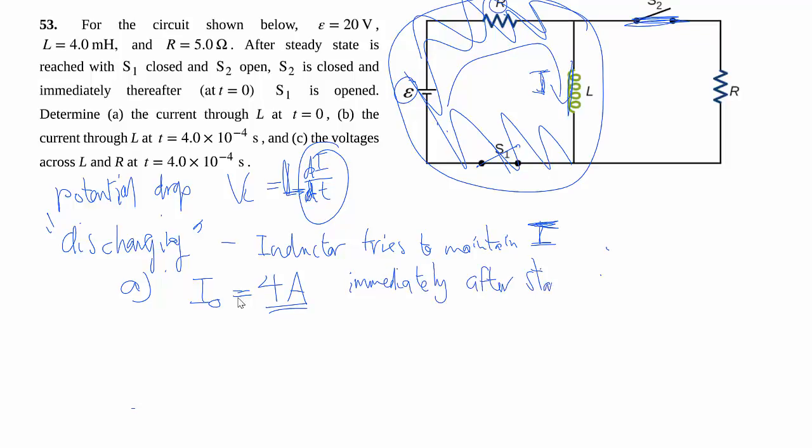So it tries to maintain that at the very beginning. So this might be something you're not quite used to, because for the capacitor, you can say it acts like a battery, which is a voltage source. But in this case, this doesn't act like a voltage source, it acts like a current source. It provides a certain amount of current in my circuit.